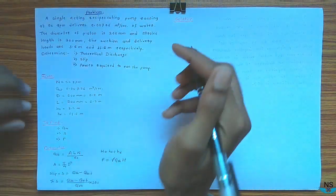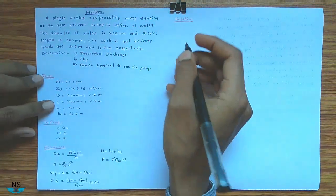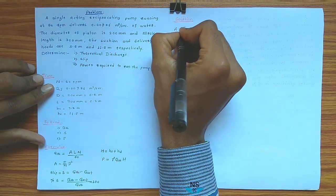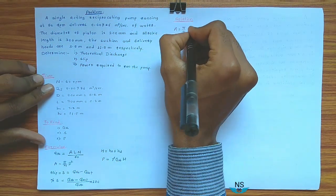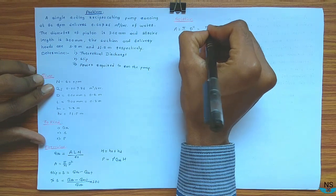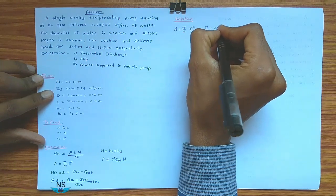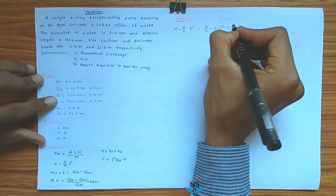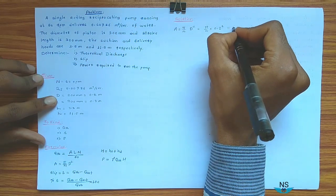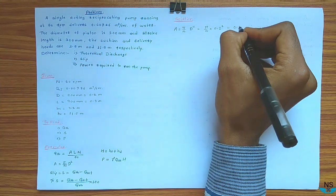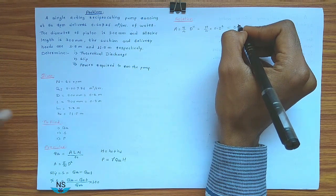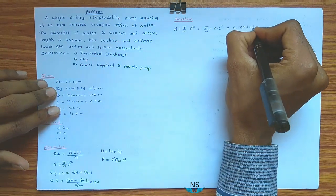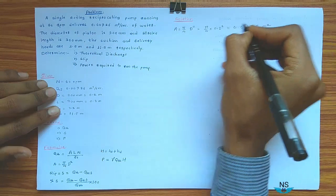Solution: first, find area. Area A is equal to π/4 into d², that is equal to π/4 into (0.2)², which is equal to 0.031415 m².